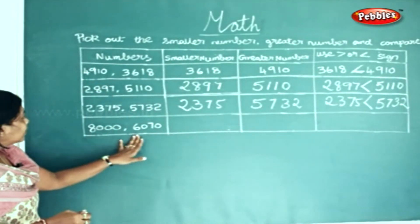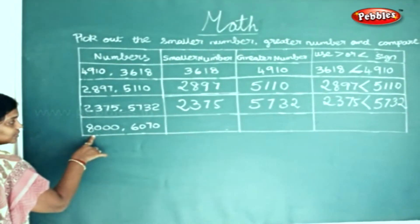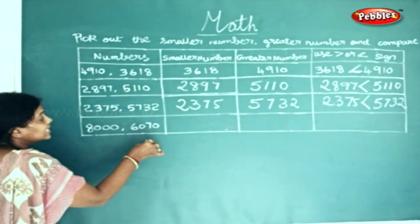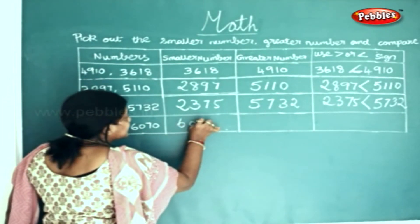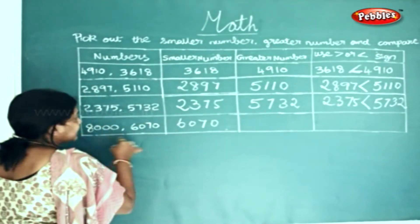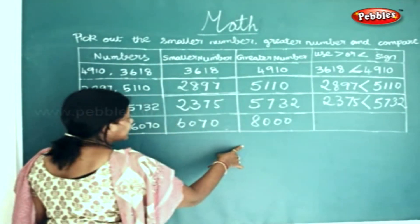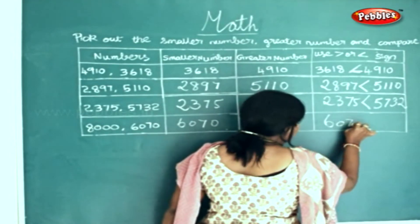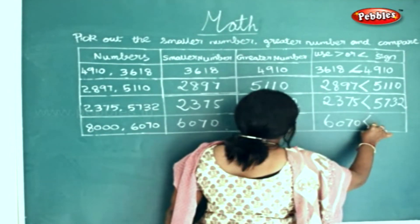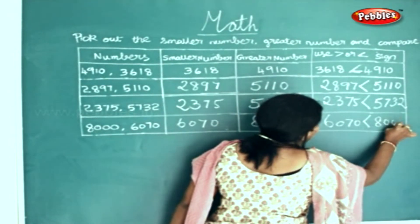In these two numbers, 6070 is the smaller number and 8000 is the greater number. So 6070 is smaller than 8000.